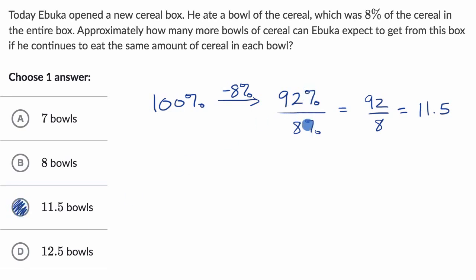If the percent is confusing, you could say, all right, let's just imagine that there were, I don't know, 100, pick a unit, in the original box, then every serving he eats 8, and so he's left with 92, and then if every serving he's eating 8, 92 divided by 8 is 11.5.